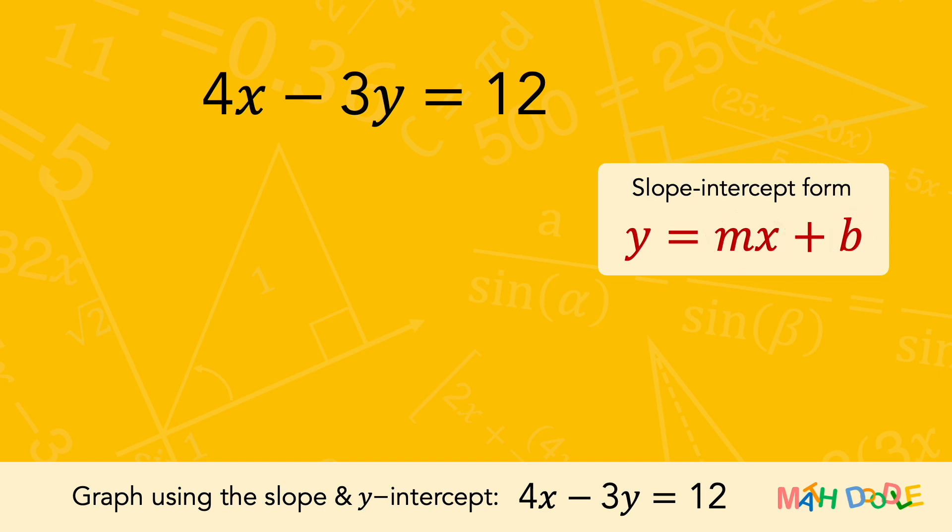So, to rewrite the equation in the slope-intercept form, we are going to solve the equation for y. To do this, we are going to eliminate 4x on the left side by subtracting 4x.